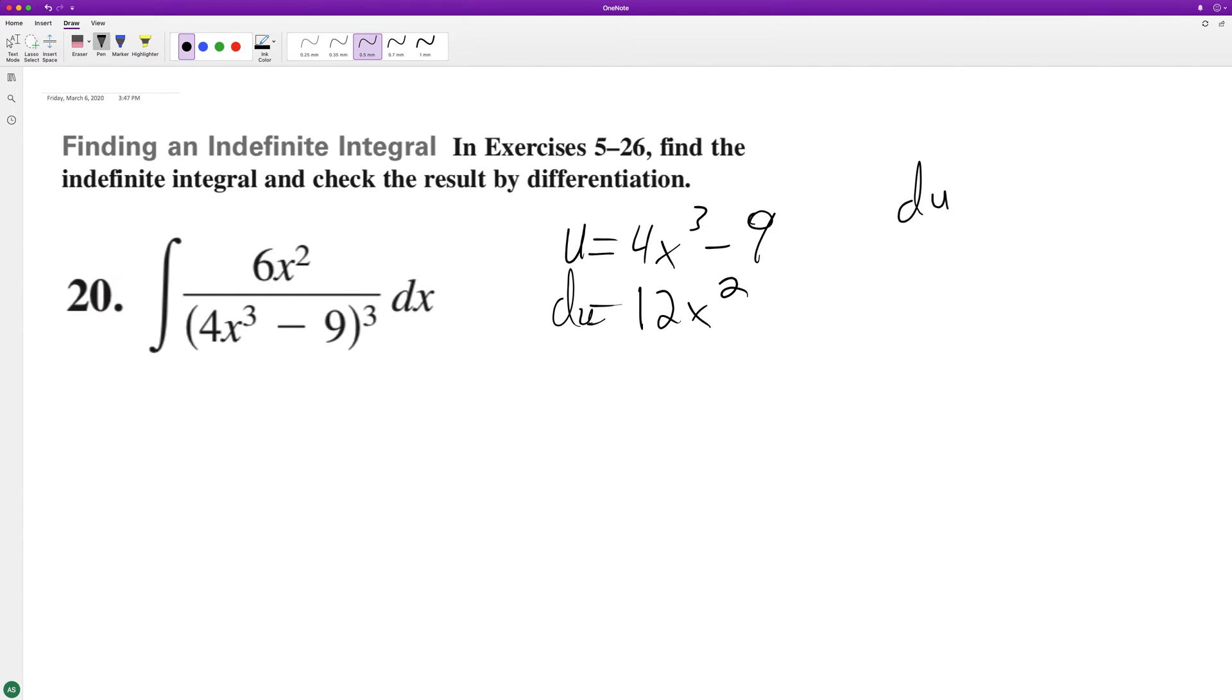So to get dU equal to dx, we need to multiply it by half to get the 6x squared. So this will be one half integral of U raised to the negative 3, dU.